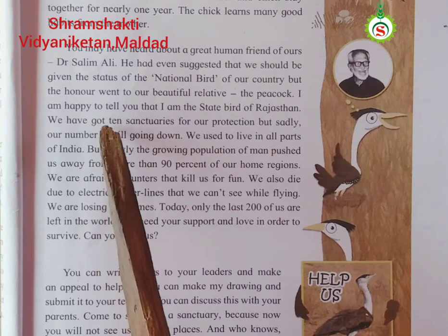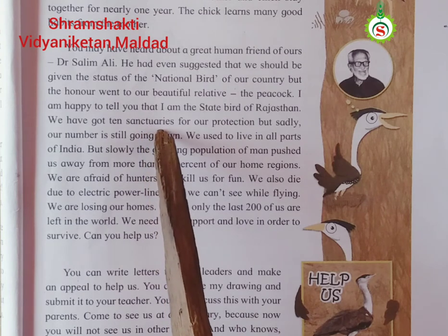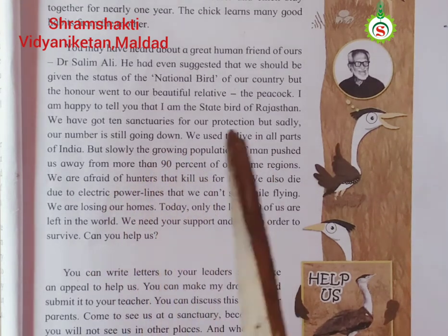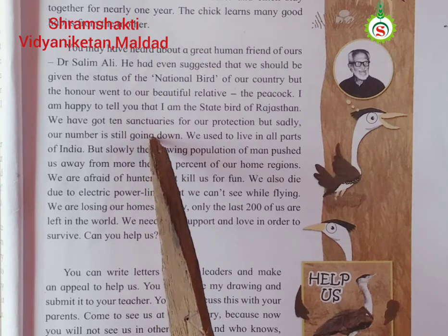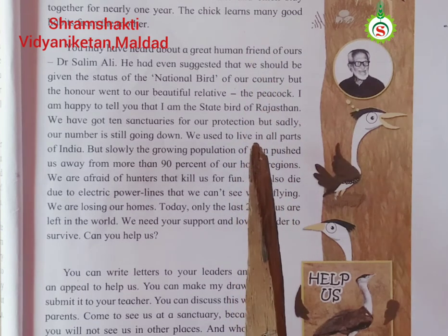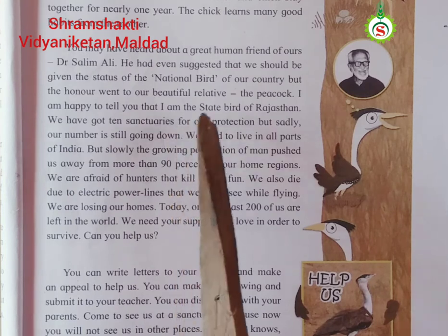Now, this bird says we have got 10 sanctuaries for our protection. So what is the meaning of 'sanctuary'? Sanctuary means a place where birds or animals are protected from being hunted — areas in their natural habitats where they are protected. There are forest officers who look after them and make sure nobody attacks them, spoils their habitat, or kills them for various reasons. Such places are called sanctuaries.